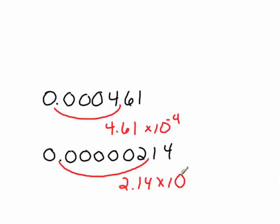Since I moved it one, two, three, four, five, six places, it's to the negative sixth power. And that is how you write a number in scientific notation that was a decimal number.